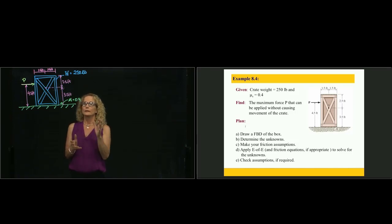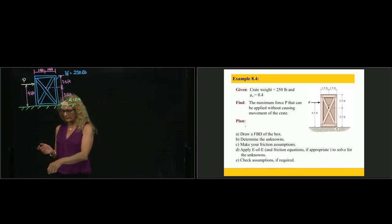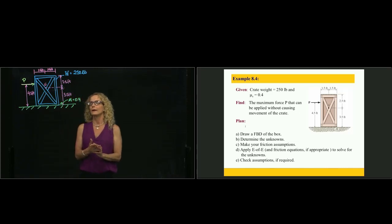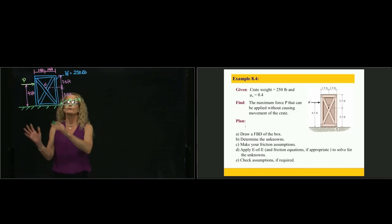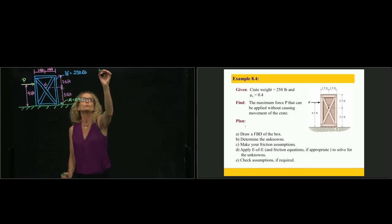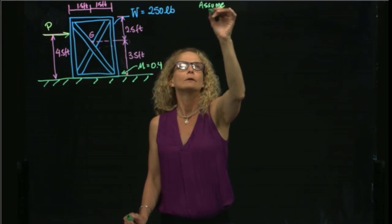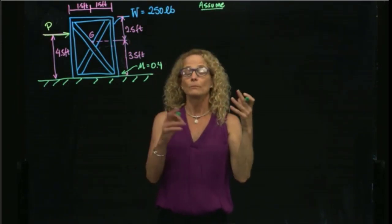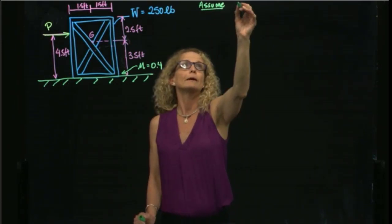We are given the position of the center of gravity of the crate, which is right here. So let's start by doing the analysis, assuming that the crate slips. So we will assume that the impending motion occurs by slipping.